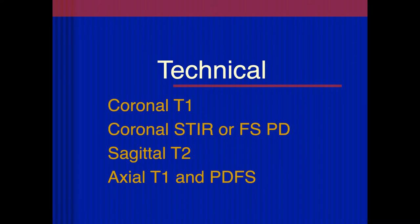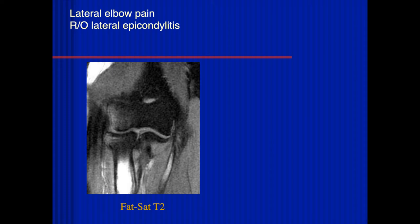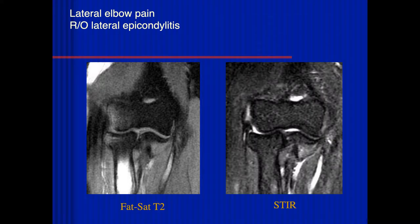We'll talk about MR of the elbow. We don't really need to go through the technical aspects of the pulse sequences. This is a patient that came with lateral pain. There's increased signal on the radial head as well as the lateral side, and I'm not sure if that's real because it does look like there's artifact in this examination. There's also some increased signal on the lateral condyle and epicondyle. I'd like to compare to a STIR image.